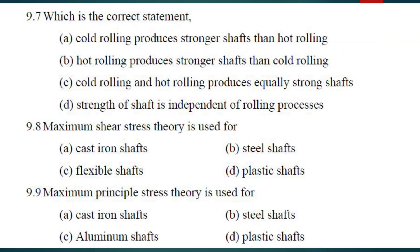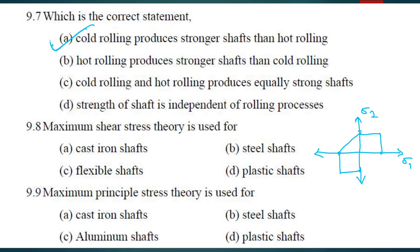Which is the correct statement? Cold rolling produces a stronger shaft than hot rolling. The maximum shear stress theory — that graph is also important. For sigma 1 and sigma 2, in the shear stress theory you will get a hexagon shape. The shear stress theory and maximum distortion energy theory — both are used for ductile metals.